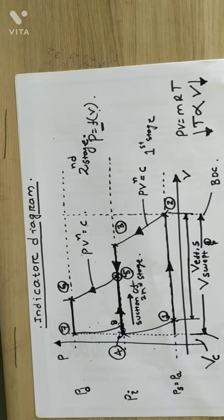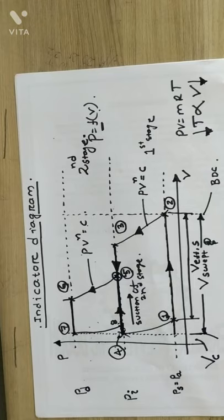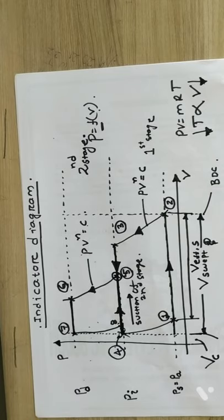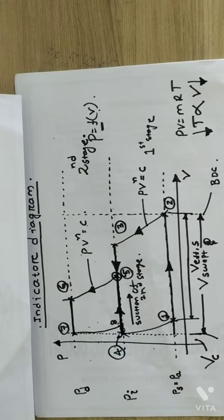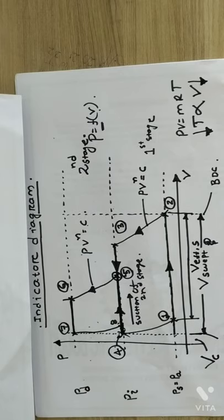This is a very realistic and practical indicator diagram of a two-stage compressor with clearance volume. For mathematical derivations, we will first consider a single-stage compressor without clearance, then with clearance, then two-stage. Our syllabus only covers up to the first stage compressor without and with clearance volume. This is the whole procedure of how the indicator diagram works. Thank you very much, have a good day, stay safe.